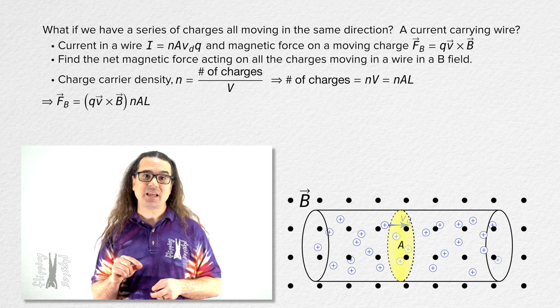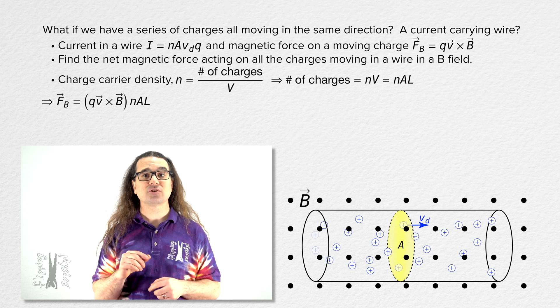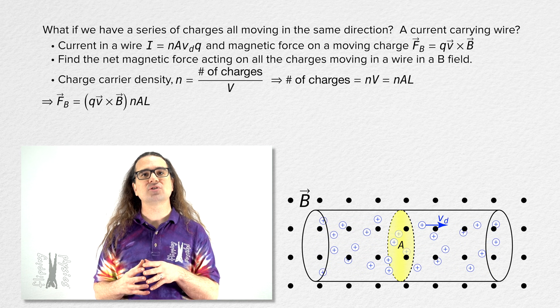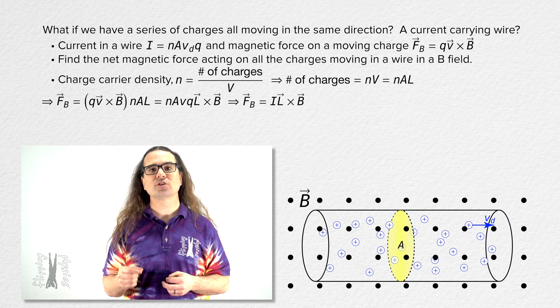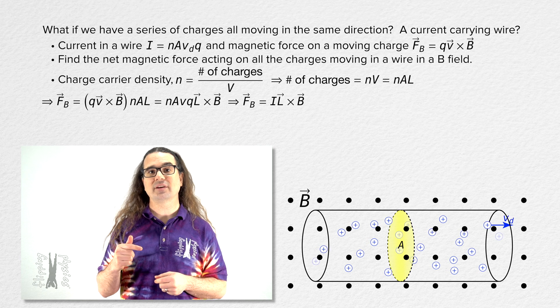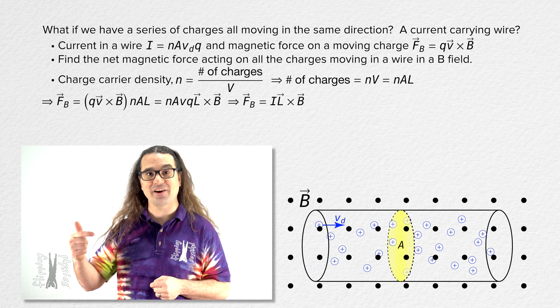Everything outside the parentheses is a scalar so we can move all of those variables to the front of the equation. Now, we can substitute current in for charge carrier density times cross-sectional area times velocity times charge per carrier.